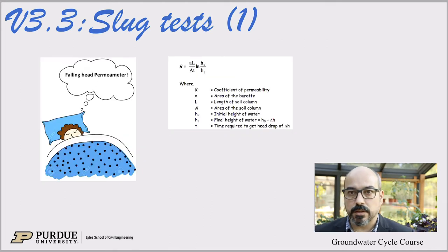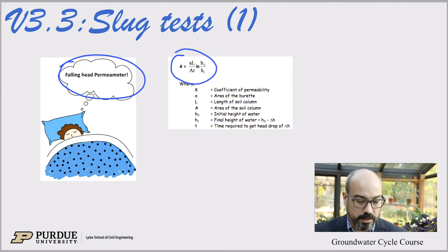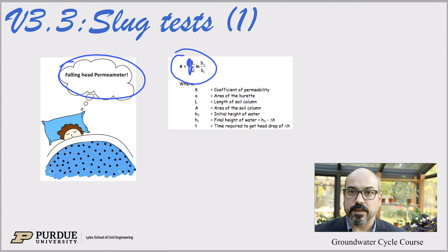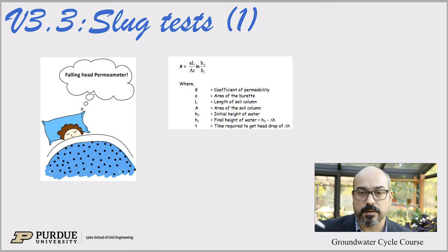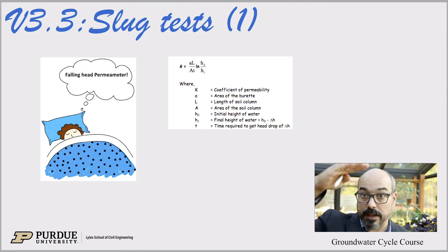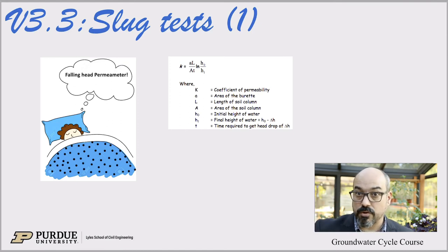Before doing a little theory, I want to mention the falling head permeameter. From the Darcy lectures, we saw that hydraulic conductivity is given by an equation involving the cross-sectional area of the small tube and the sand column, the length of sand, and the log of the ratio of initial head to some later head. You can see how the falling head permeameter is conceptually very similar to a piezometer where you put a slug in, raise the water level, and watch it drop — essentially the same thing, measuring hydraulic conductivity using Darcy's law.